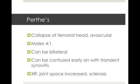Perthes disease is demonstrated by the collapse of the femoral head and is akin to avascular necrosis found in older populations. Males are more affected than females and it can be bilateral. It can be confused with transient synovitis, so if you have that niggling suspicion it's important to refer them on.